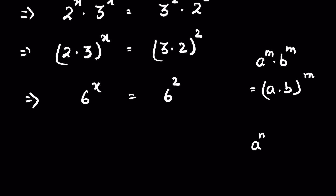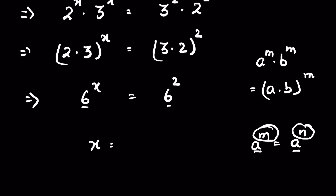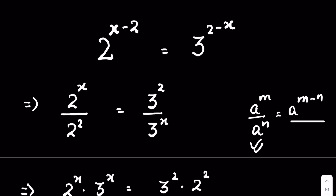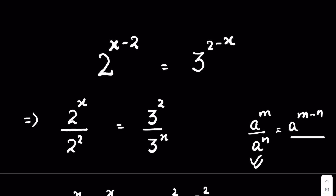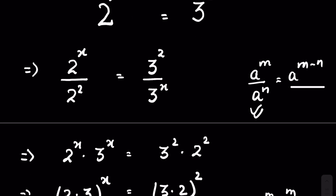Now there is a rule: if a raised to the power m is equal to a raised to the power n, and a is not equal to 0 or 1, then m is equal to n. So since the bases are the same, that means x is equal to 2. This is our answer.